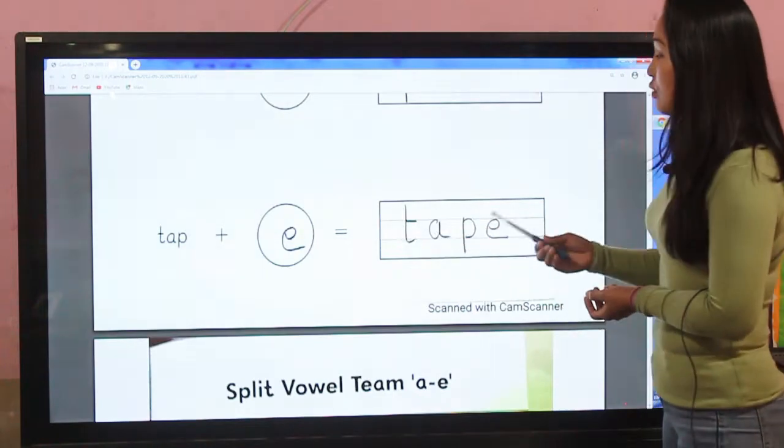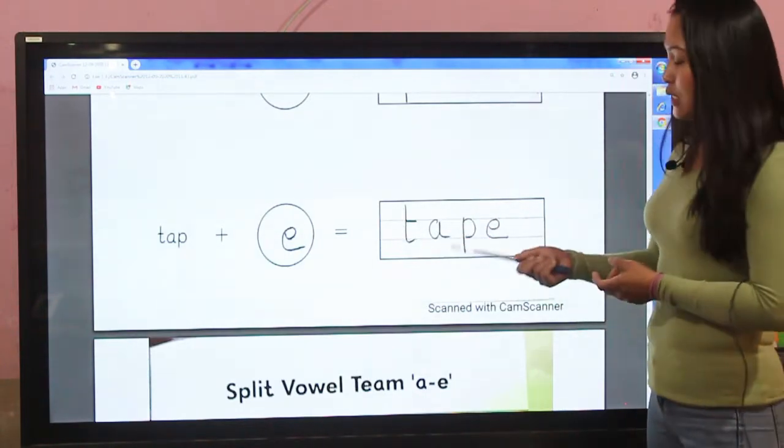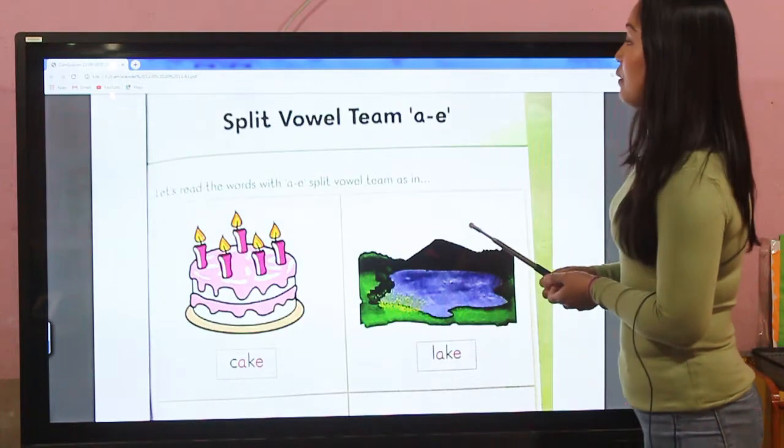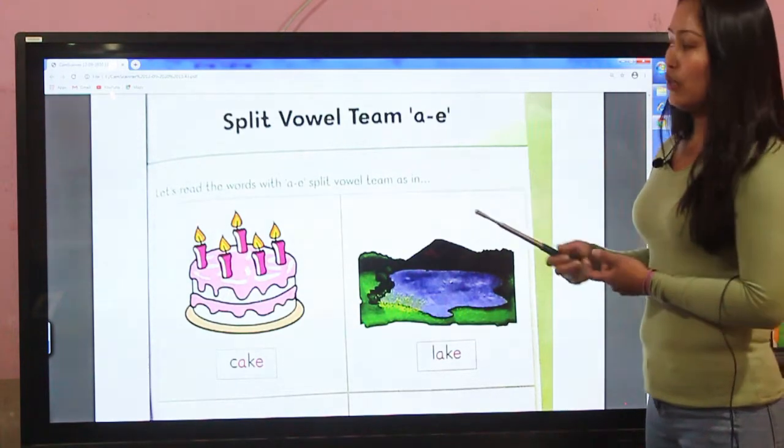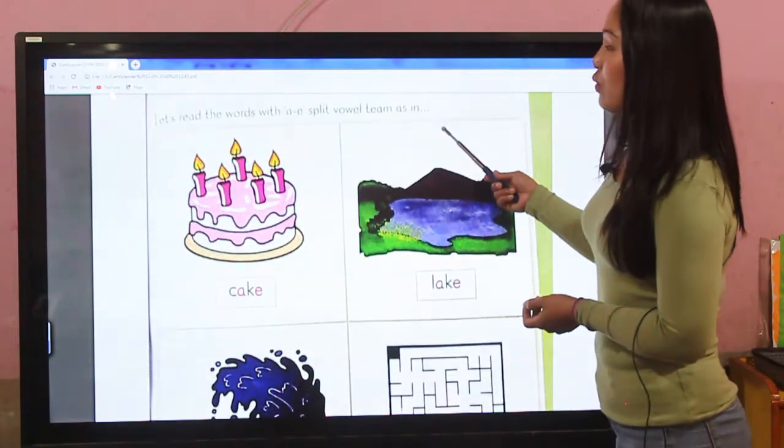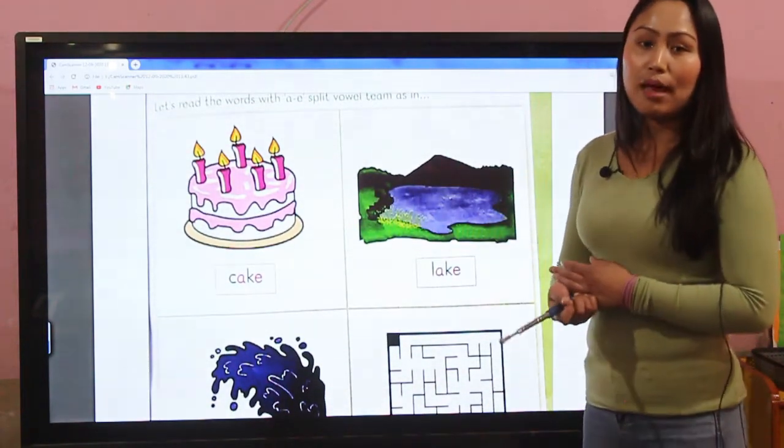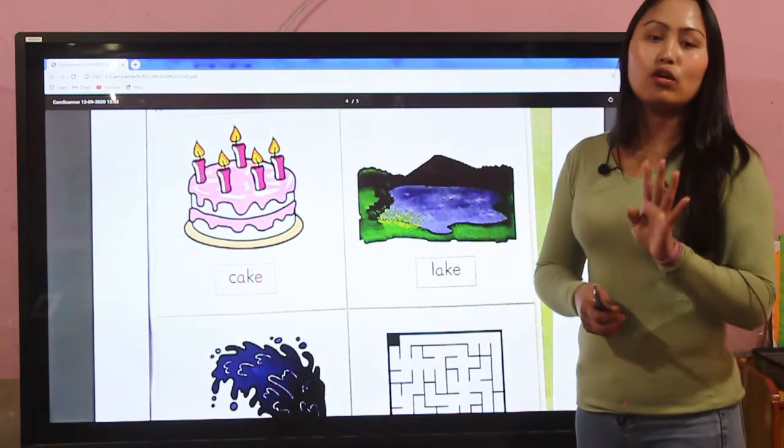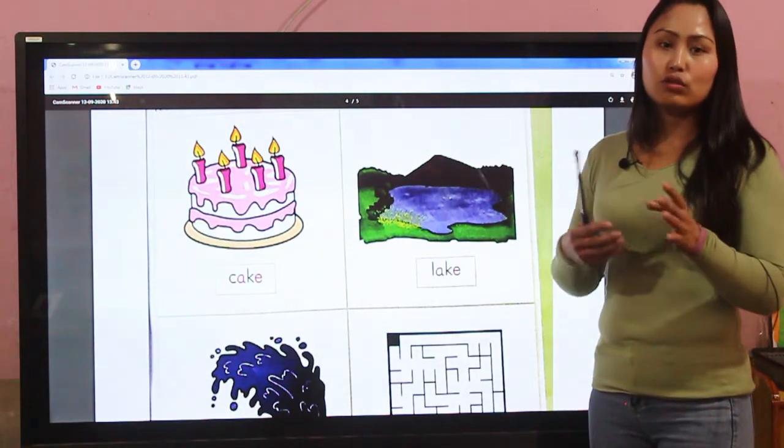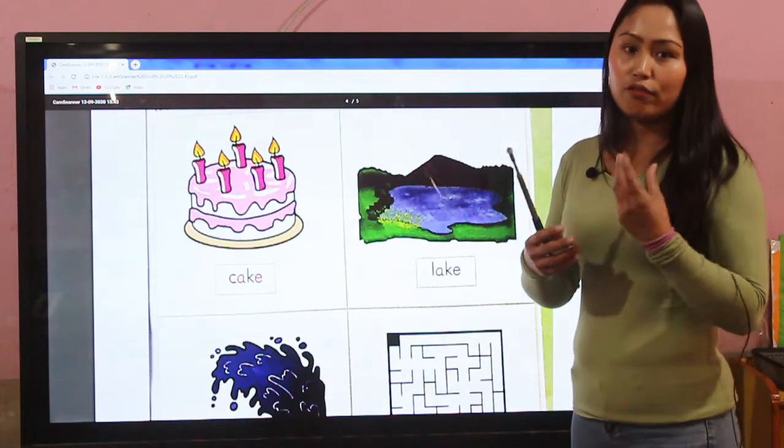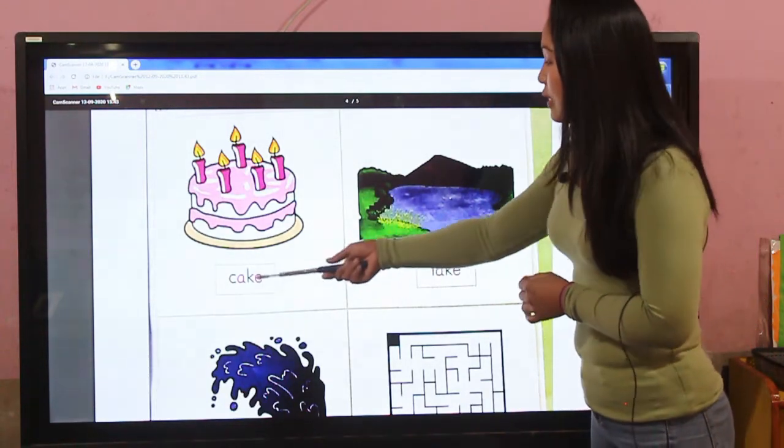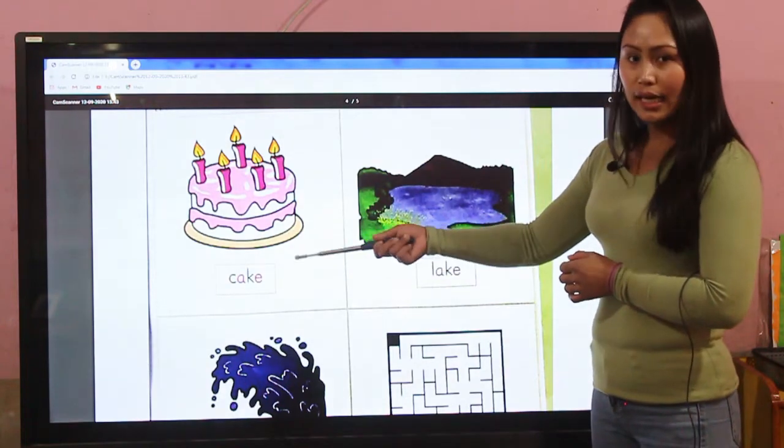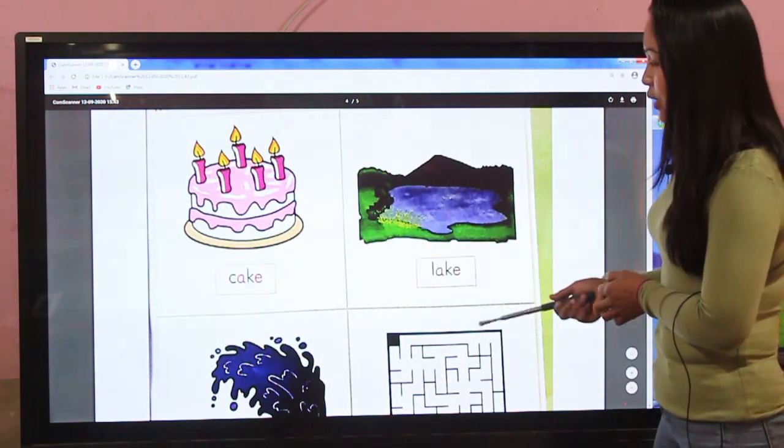Now some more split vowel team of a-e. Let's read the word with a split vowel term. Here we go - it's cake. When two or more vowels are together, they form words. C-a-k-e cake, l-a-k-e lake.